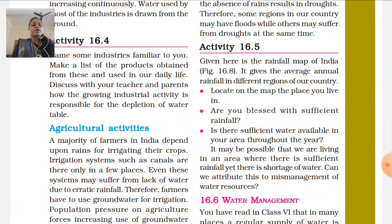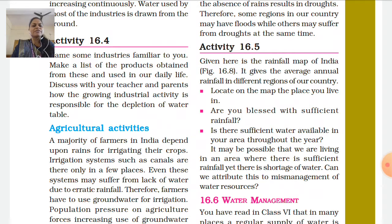In this activity, you need to locate on the map the place where you live. Using the rainfall map of India (figure 16.8), identify your location and check whether your area is blessed with sufficient rainfall. Is there sufficient water available in your area throughout the year?